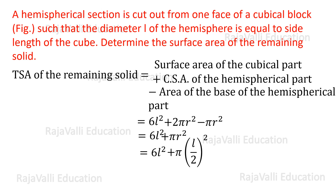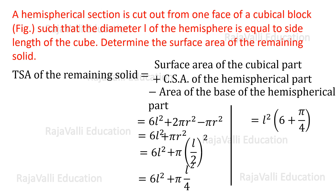We substitute R = L/2, since the diameter is L. Expanding, we get 6L² + π(L/2)² = 6L² + πL²/4. Taking L² as a common factor, we get L²(6 + π/4). Taking LCM, this becomes L²(24 + π)/4. This is the total surface area of the remaining solid: L²(24 + π)/4 square units.